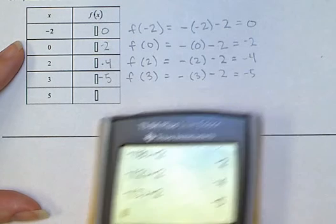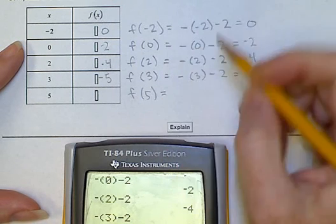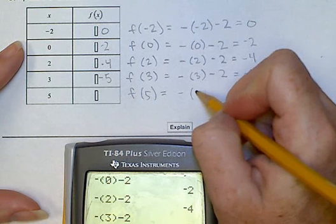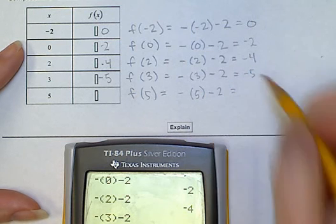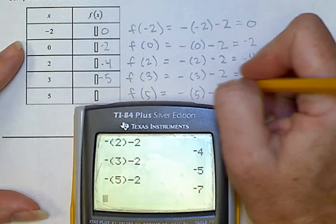One last one, f of 5 equals where that x was. Now we're going to put a 5. And so we have negative 5 minus 2. So I'm going to type that into the calculator. Negative 5 minus 2 equals negative 7.